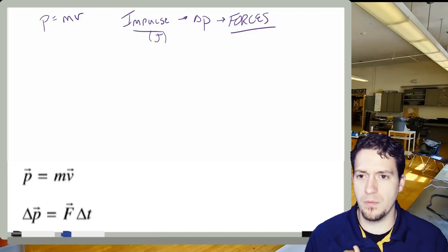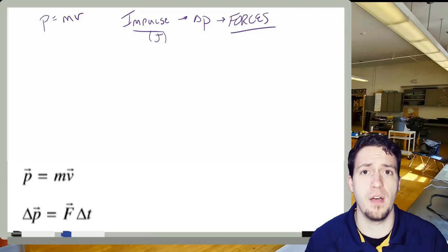If we think about me trying to catch something or me trying to stop something, I can stop things in many different ways. I could stop something with a lot of force very, very quickly. Or if I'm only going to apply a little bit of force, it's going to take me a lot longer. And this is where we get that idea of F∆t.